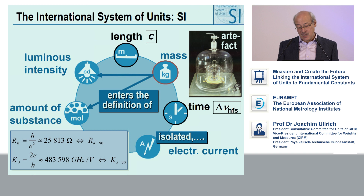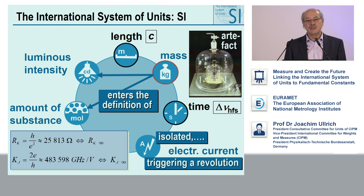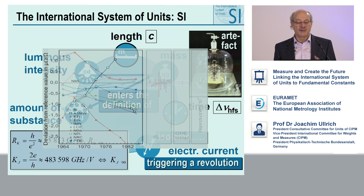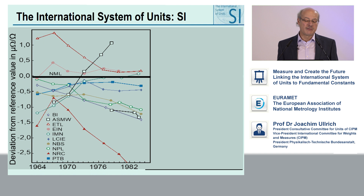At the same time, this made the definition of the ampere isolated — it's not connected to the other quantities now in the SI, and it's living in its own quantum world. However, this definition triggered a revolution. I would like to show that on the basis of the realization of the ohm, of resistance, as compared to a reference value. The different lines here are realizations of different NMIs — different national metrology institutes — in deviations in terms of micro-ohm.